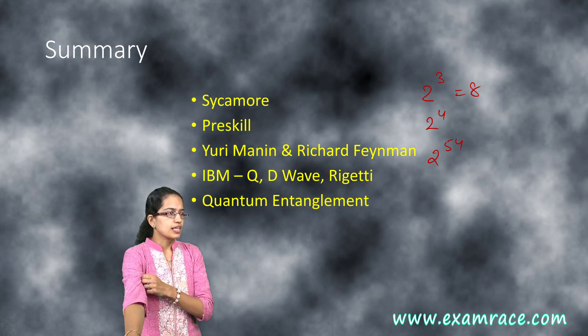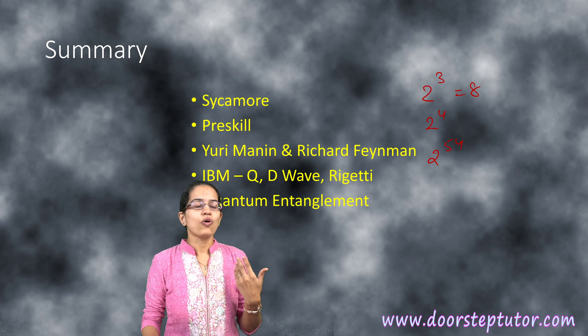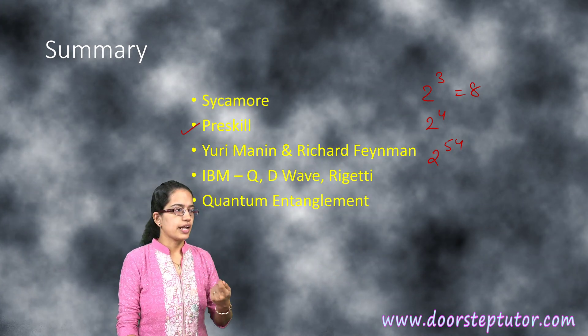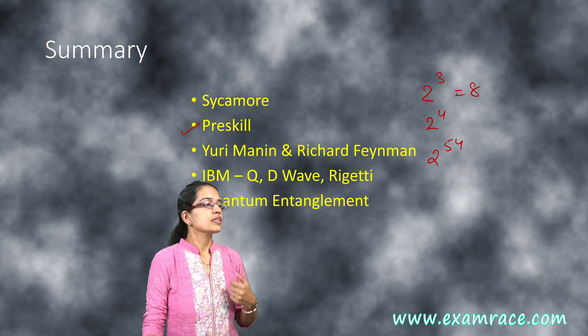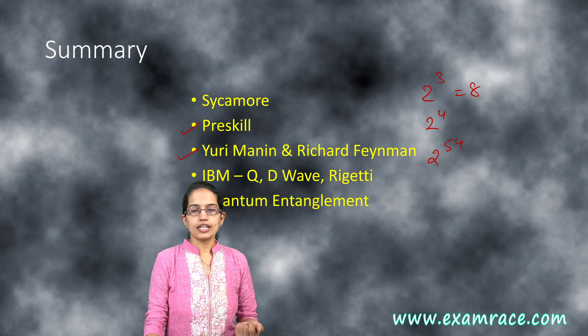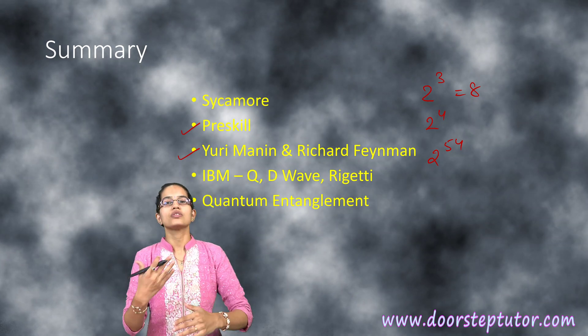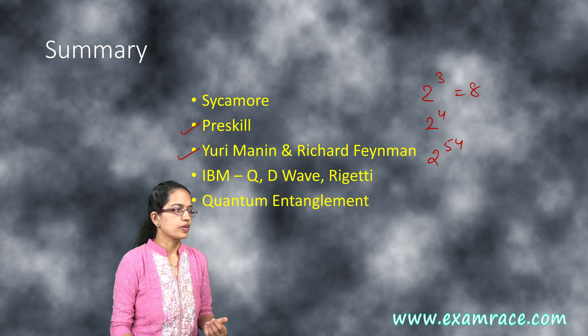The next important thing is an overview about it. Preskill was the one who started the idea of quantum computing. Yuri Manin and Richard Feynman were the ones based on whose proposals this whole idea has been going forward.